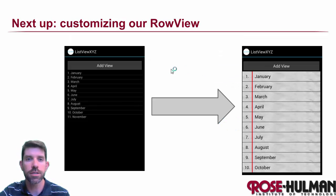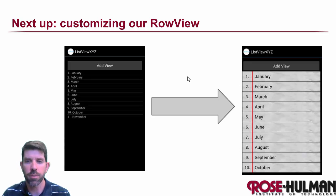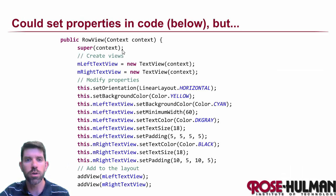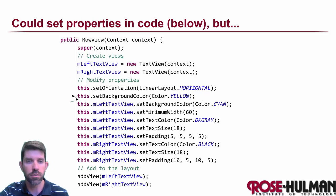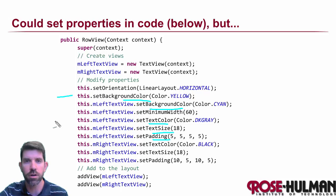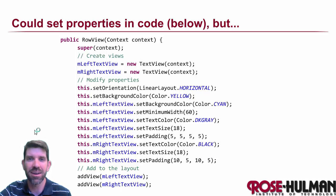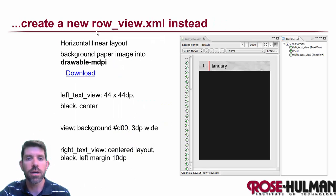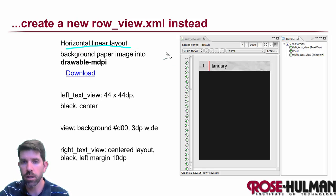One more thing: customizing the appearance so it looks nice. We could set everything in code — background color, text color, size, padding, background images — but since it's getting complex, the better approach is to use XML declaratively. We'll create a new row_view.xml: a horizontal linear layout with a paper background image you can download and place in the medium DPI drawable folder.